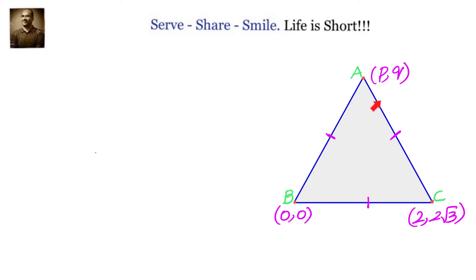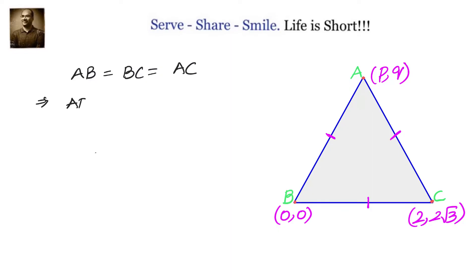Triangle ABC is an equilateral triangle. We know the coordinates of B and C, and we have to find out the coordinates of point A. Since AB equals BC equals AC for an equilateral triangle, we can square both sides so that AB square equals BC square equals AC square.